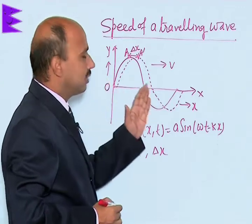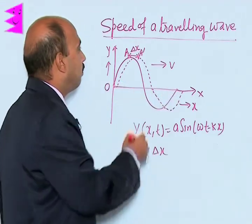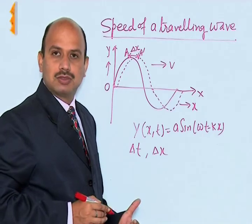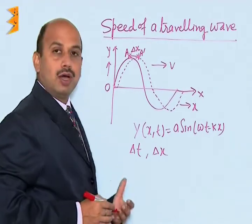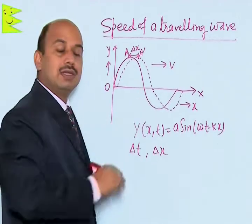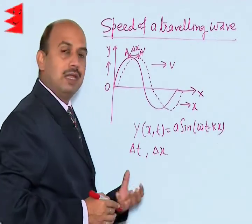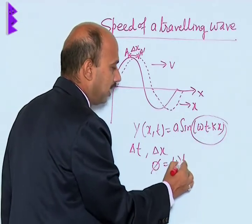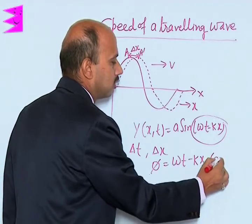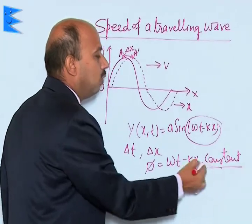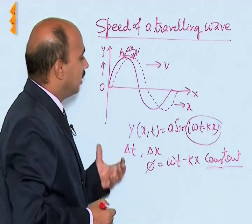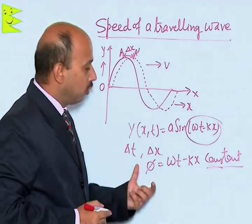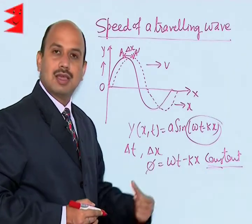Now, when this wave travels in this direction, the point A is on the string here. The point A on the string does not retain its position, but the point A on the waveform does retain its position. This is only possible if the phase φ = ωt - kx remains constant. The particle on the string does not retain its position, whereas the point on the waveform retains its position — this is possible if φ = ωt - kx is constant.